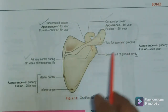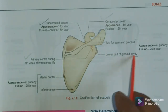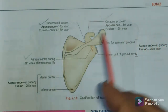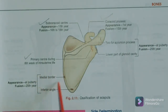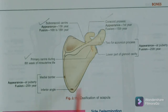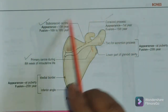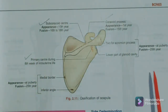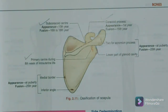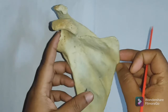There are two secondary centers for the acromion process and one secondary center for the lower two-thirds of the glenoid cavity margin. Additionally, one center for the medial border and one for the inferior angle. All of these appear at puberty and fuse by the 25th year. These are important points you need to learn well for examinations.